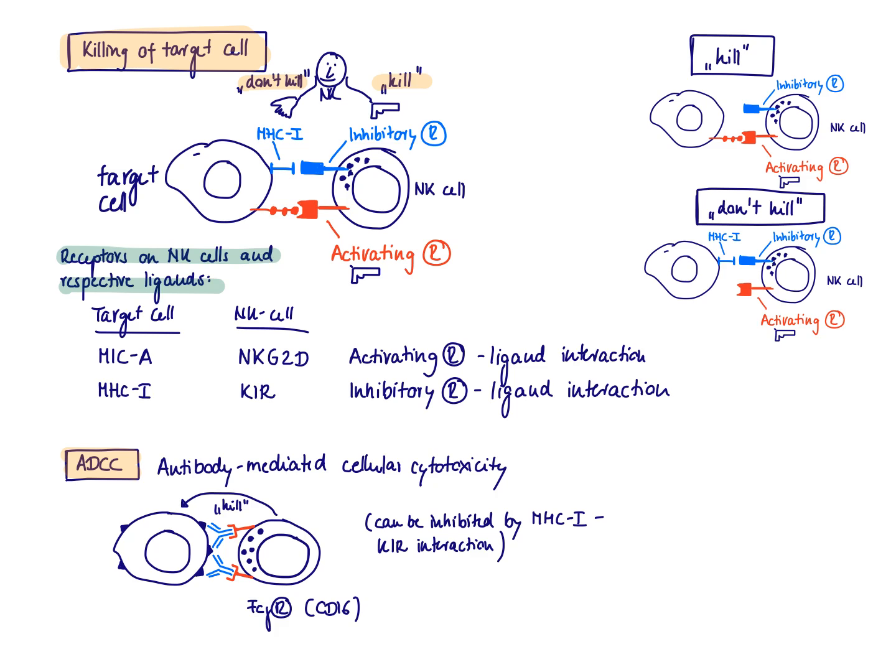What I show here are the receptors on the NK cell and the respective ligands. Because so far we only talked about inhibitory receptors, activating receptors, but did not mention yet the names. I list here just the ones that are the most important and that everybody should know. On the NK cell, a very important activating receptor is NKG2D. This is an example of an activating receptor, and this will interact with a very famous activating ligand, the MYC A, A for activating.